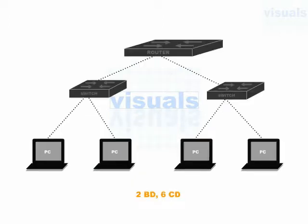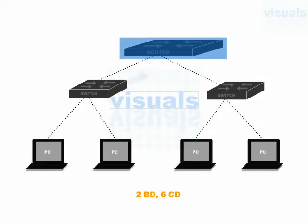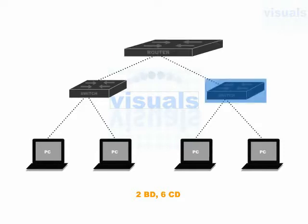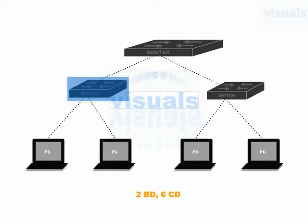In the next example with a router and two switches with PCs: the router's each interface provides a separate broadcast domain, giving two broadcast domains. Each port of a switch provides a separate collision domain — each switch has three connections, giving three collision domains each. In total, six collision domains and two broadcast domains.